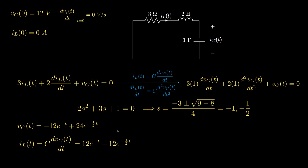To find the inductor current, we note that the current through the capacitor equals the current through the inductor, and use the relationship iC = C·(dVC/dt). Differentiating VC gives 12·e^(-t) - 12·e^(-t/2), and multiplying by the capacitance of 1 farad yields IL(t) = 12·e^(-t) - 12·e^(-t/2).